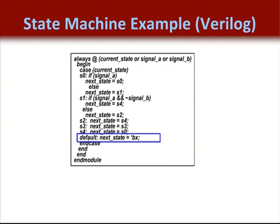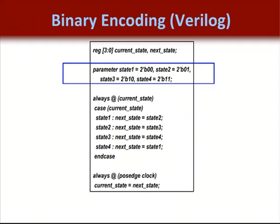This slide shows the rest of the finite state machine. This always block shows the next state logic as part of a large case statement. Note that it uses a default statement, which will reduce the size of the finite state machine and is critical — make sure you use a default statement. Here we see a finite state machine encoded for binary using the parameter statement. This is very helpful, as it makes it a simple task to re-encode for one-hot or gray encoding and compare synthesis results for speed and size.